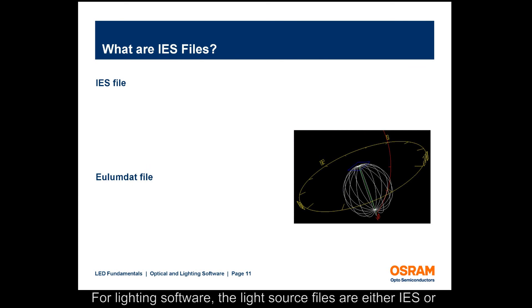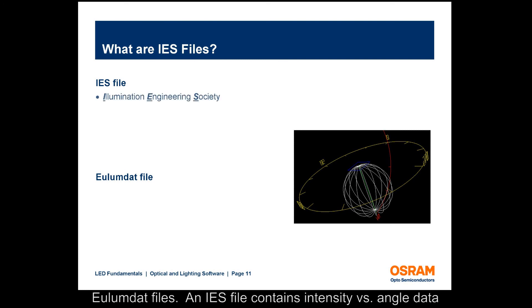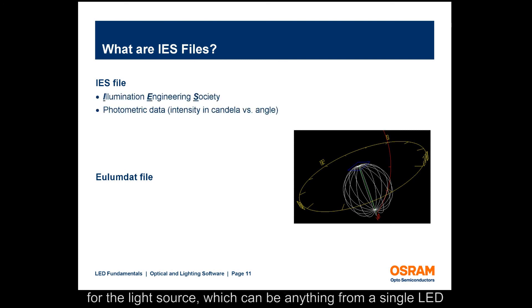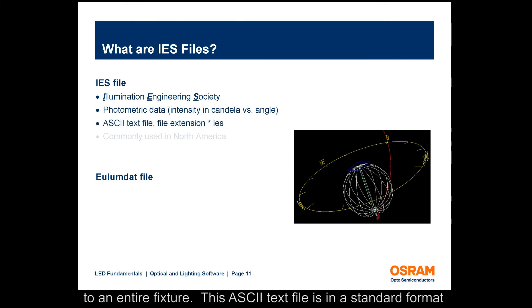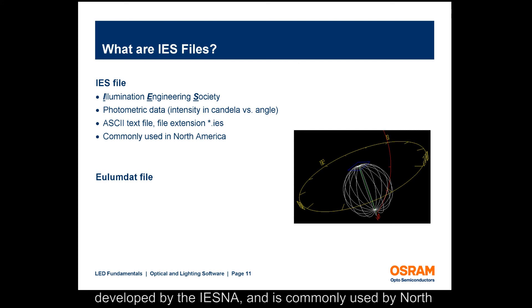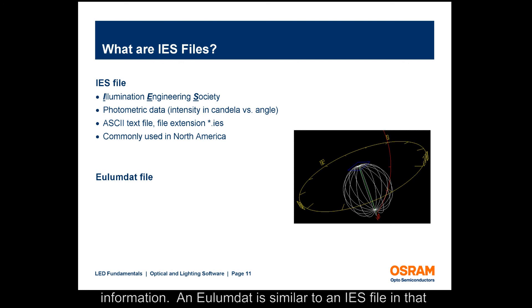For lighting software, the light source files are either IES or ULUMDAT files. An IES file contains intensity versus angle data for the light source, which can be anything from a single LED to an entire fixture. This ASCII text file is in a standard format developed by the IESNA and is commonly used by North American fixture manufacturers to distribute photometric information.